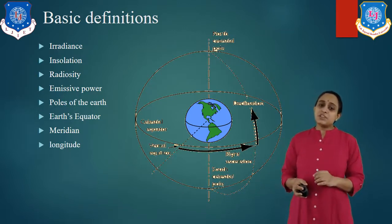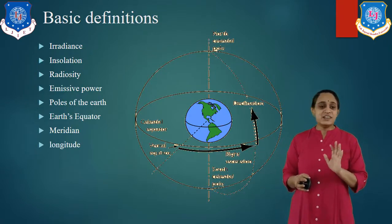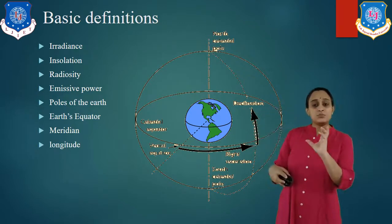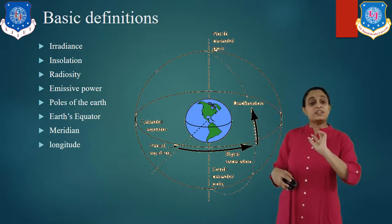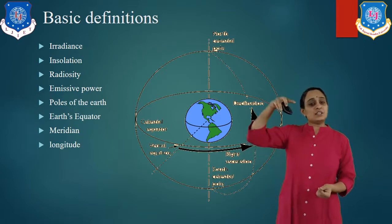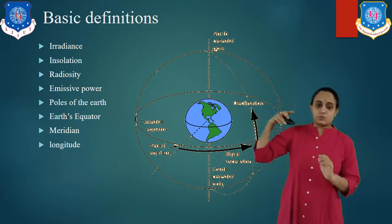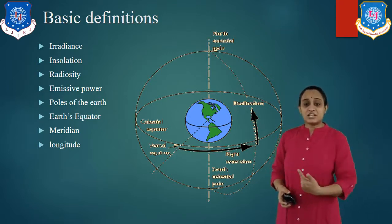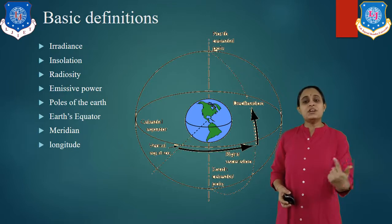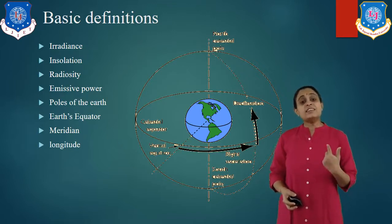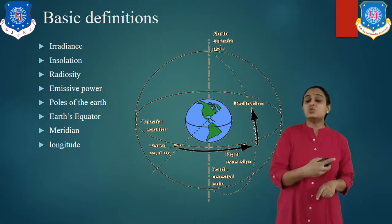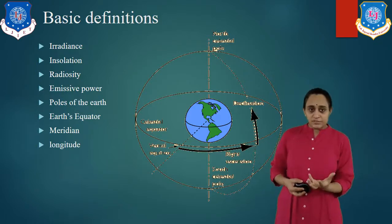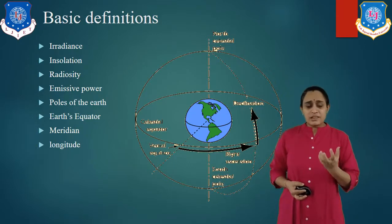The next definition is the poles of the Earth. The ends of the axis of rotation of the Earth, from which the Earth rotates on its axis, are known as poles — one is the North Pole and the other is the South Pole. Now let us understand the Earth's equator. It is an imaginary great circle normal to the Earth's axis, dividing the distance between Earth's poles along its surface into two equal halves. The upper half is known as the Northern Hemisphere and the lower half is known as the Southern Hemisphere.